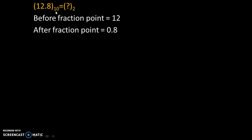Base 10 means this given number is in the decimal number system, and base 2 means we need to convert that number into a binary number system. To do that, we will divide this number into 2 parts: before the fraction point and after the fraction point. Before the fraction point, the value is 12. After the fraction point, the value is 0.8.